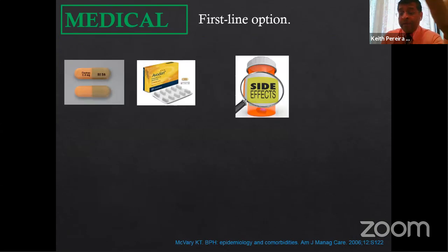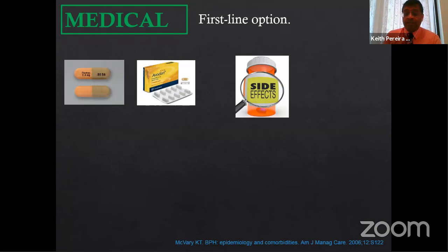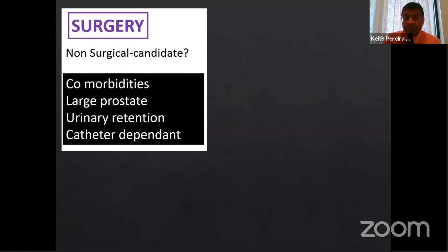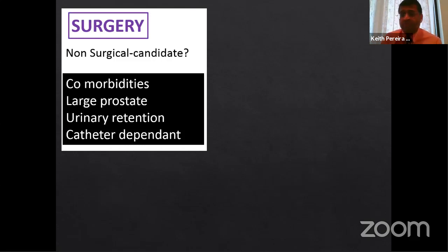From a urological referral standpoint, the ideal PAE candidates are those on medical therapy experiencing side effects — hypotension from alpha-blockers, sexual side effects from 5-alpha reductase inhibitors. A 50-year-old who doesn't want surgery and doesn't want medications is a great case for urologists to refer. Another ideal candidate is a younger patient who wants to avoid sexual side effects and buy time before surgery — perhaps planning surgery at 70 but wanting PAE now.